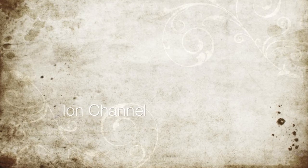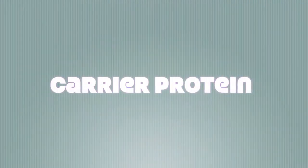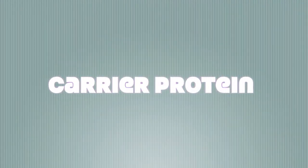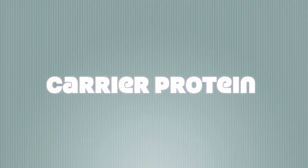An ion channel is a transport protein in a cell membrane through which ions can pass. A carrier protein is a transport protein that carries a specific substance across a cell.